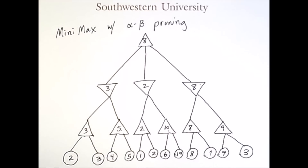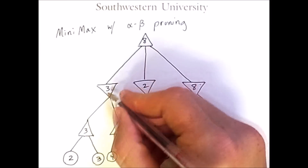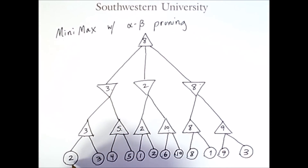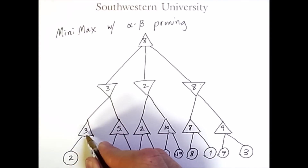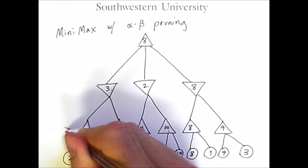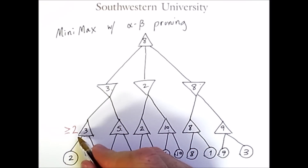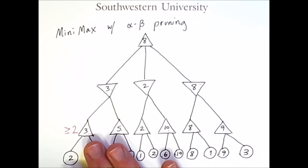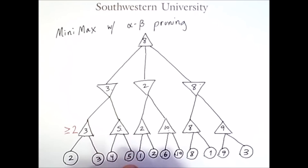If we start from the top, assuming we have an empty tree from scratch so we don't know what the node values are yet, we'll proceed all the way down the left branch to a terminal state or a state where we read a heuristic value. Once we see this value of 2, because this is a maximizing node, we know the value here will be greater than or equal to 2. We haven't seen the next value yet, but because it ends up being greater, we choose 3 — the maximum of these two values.